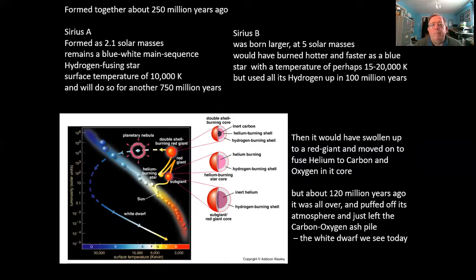But Sirius B was probably born as the much heavier star of the two at about five solar masses. It burned through that very quickly as a hot blue star with an outer temperature of between 15 and 20,000 degrees. This is because the more massive a star is, albeit it has more fuel, it burns that fuel disproportionately faster. So after only 100 million years, Sirius B ran out of hydrogen in the core. What then follows is a rearrangement, and the star swells up to become a red giant and then moves on and starts fusing helium in the core to carbon and even to oxygen.